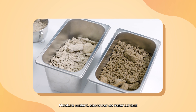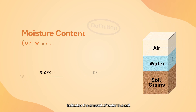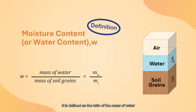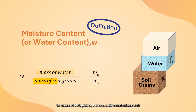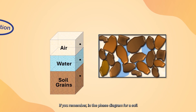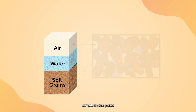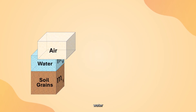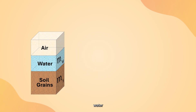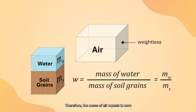Moisture content, also known as water content, indicates the amount of water in a soil. It is defined as the ratio of the mass of water to the mass of soil grains, hence a dimensionless unit. In the phase diagram for a soil, we have three material phases: air within the pores, water, and solid soil grains. Air is assumed to be weightless; therefore, the mass of air equals zero.